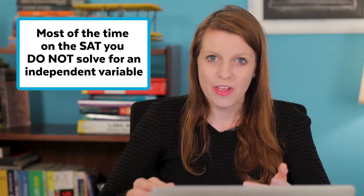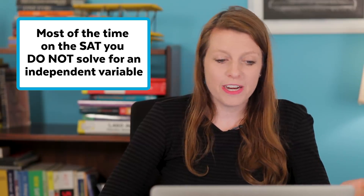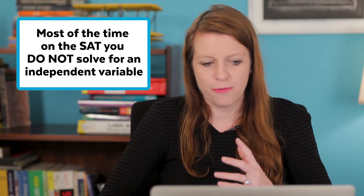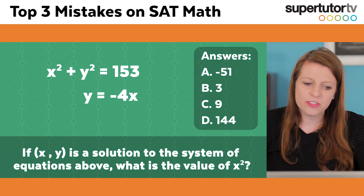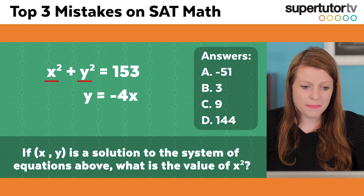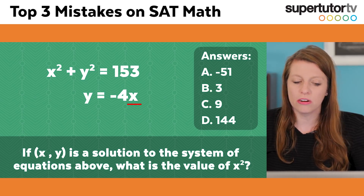So you just want to go and put your answer down. But the problem with that is that oftentimes what you're going to put down is not what you actually need. Most of the time on the SAT, you do not solve for an independent variable — you solve for the variable plus something, or the variable squared. Or you might solve for an interstitial variable you have to find in order to get to the final answer. For example, it might be easier to solve for x than y, because substituting in for x requires an extra step since x isn't isolated.